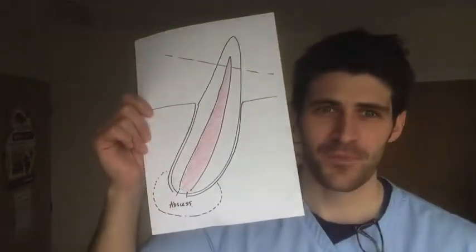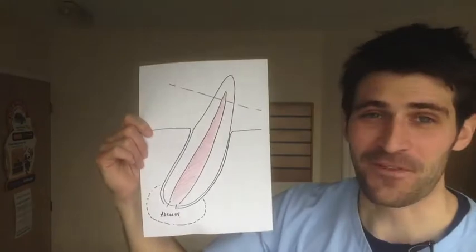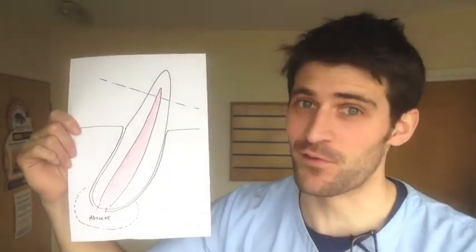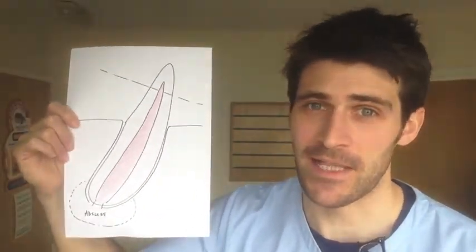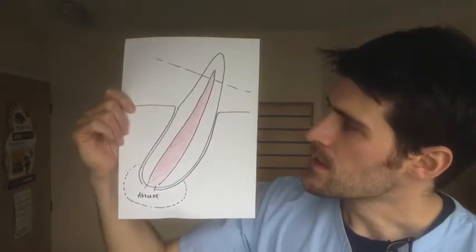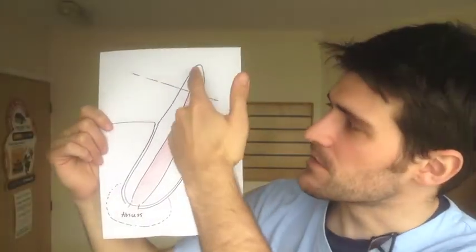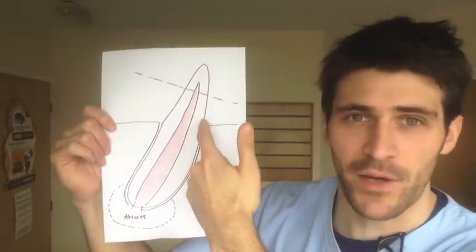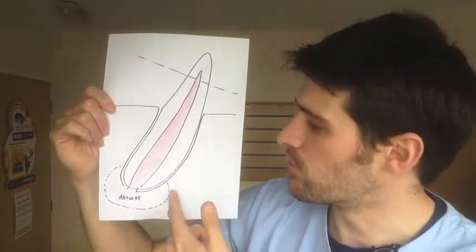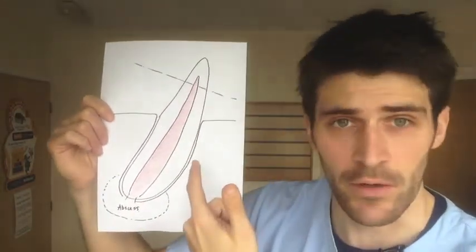Let's go back to the basics — a dental abscess. This is my basic sketch of a tooth to talk through how we get dental abscesses and in fact what one is. This is a tooth, and as this shows we've got some crown here, but actually a lot more root than we do crown.